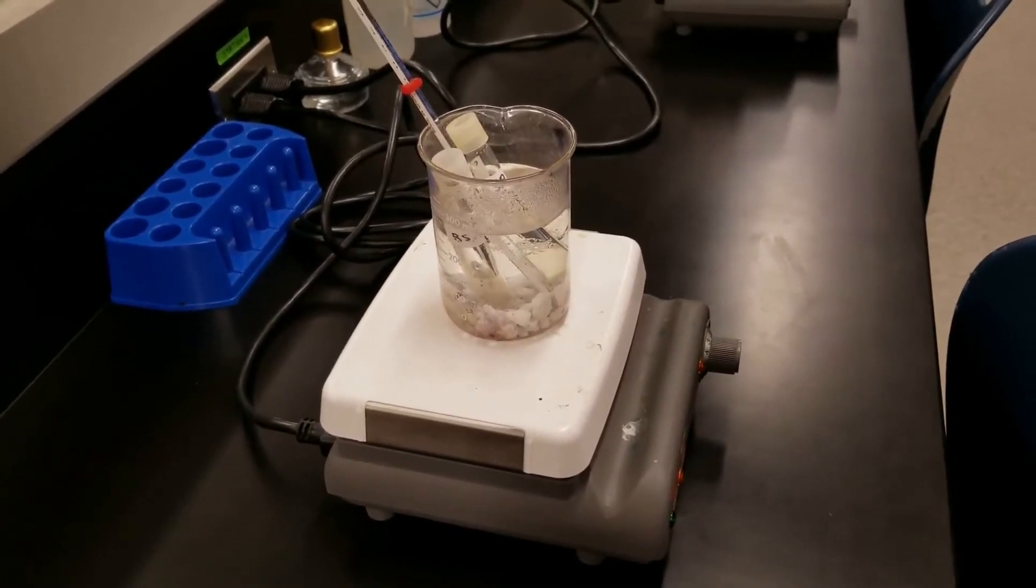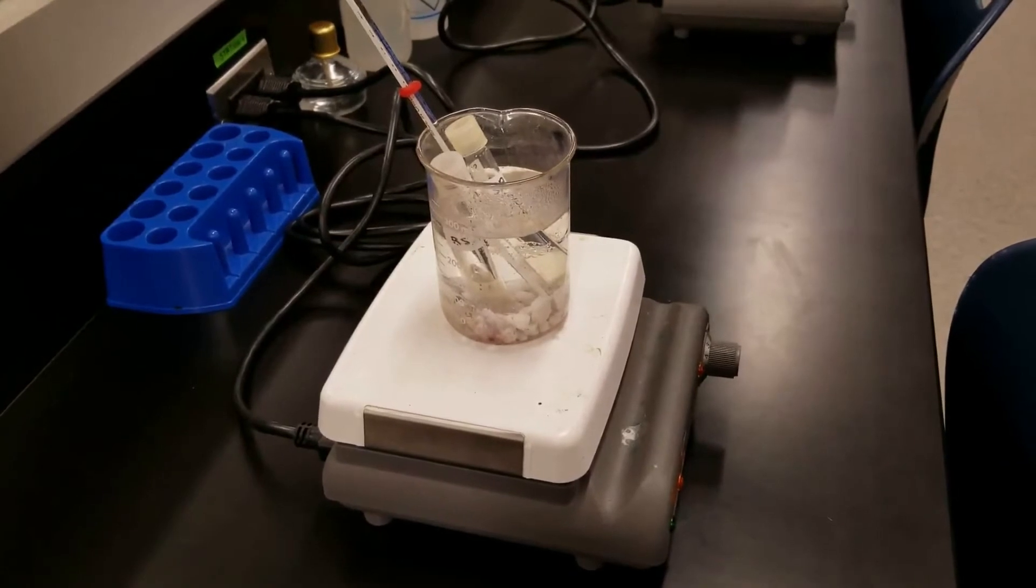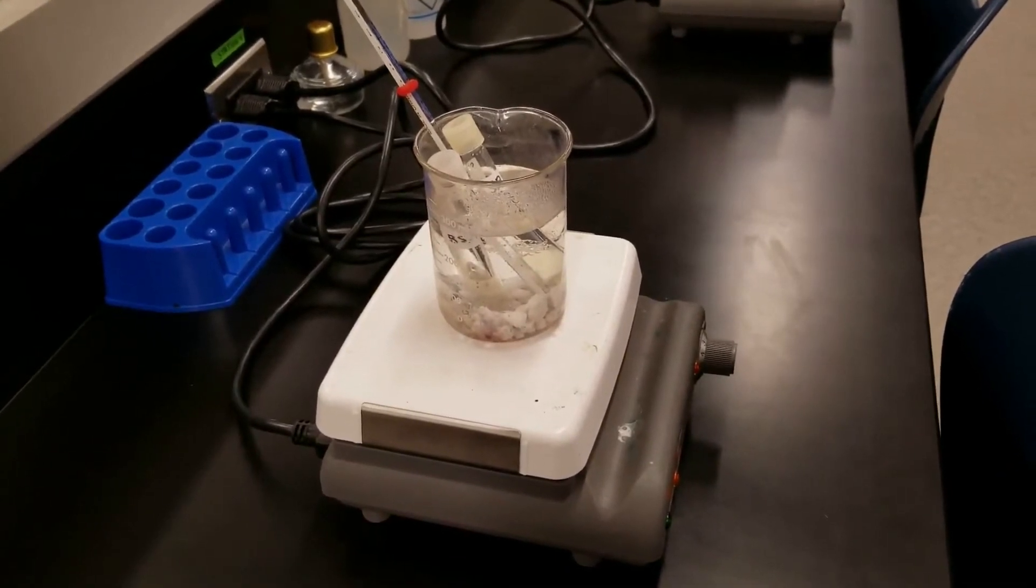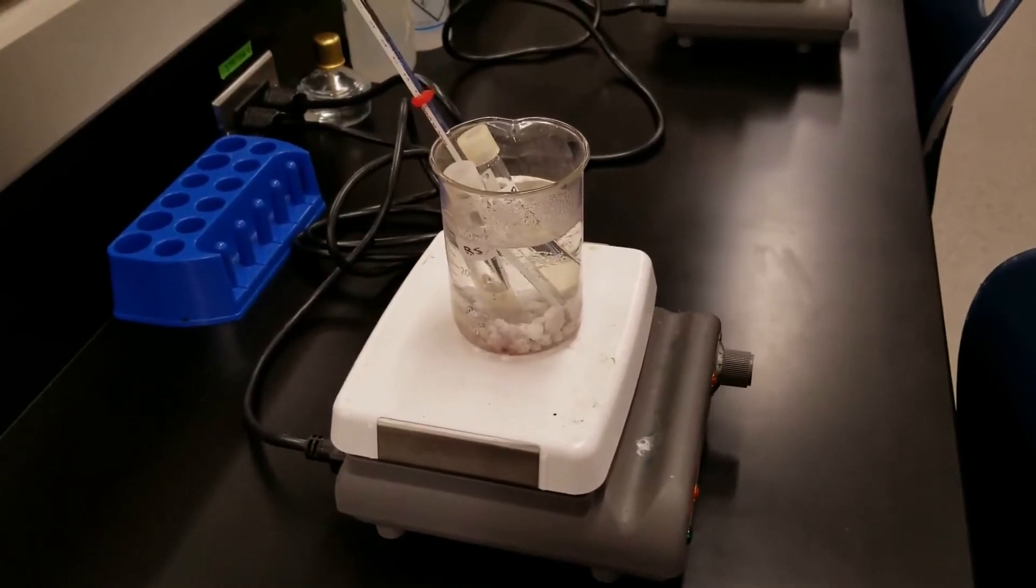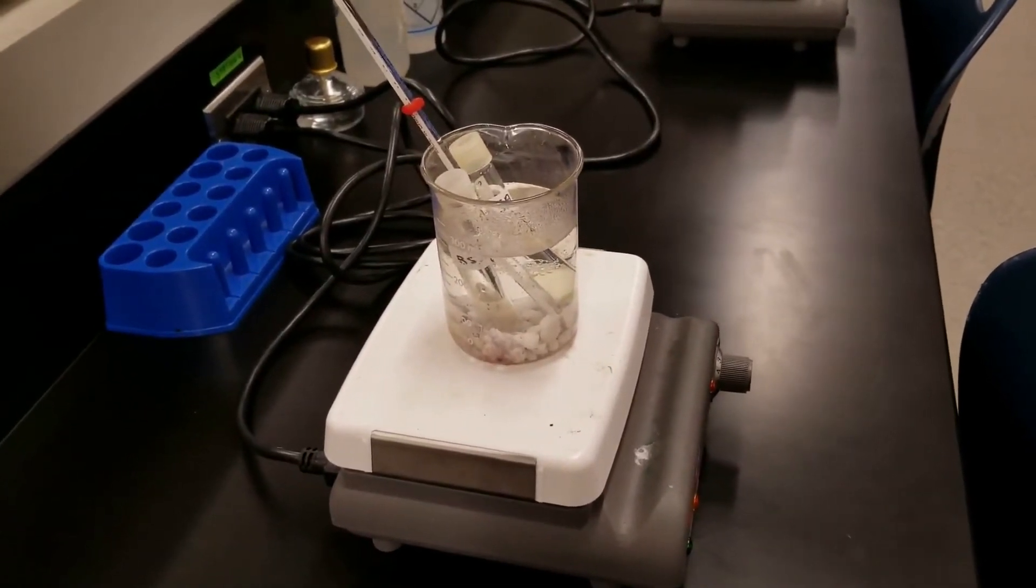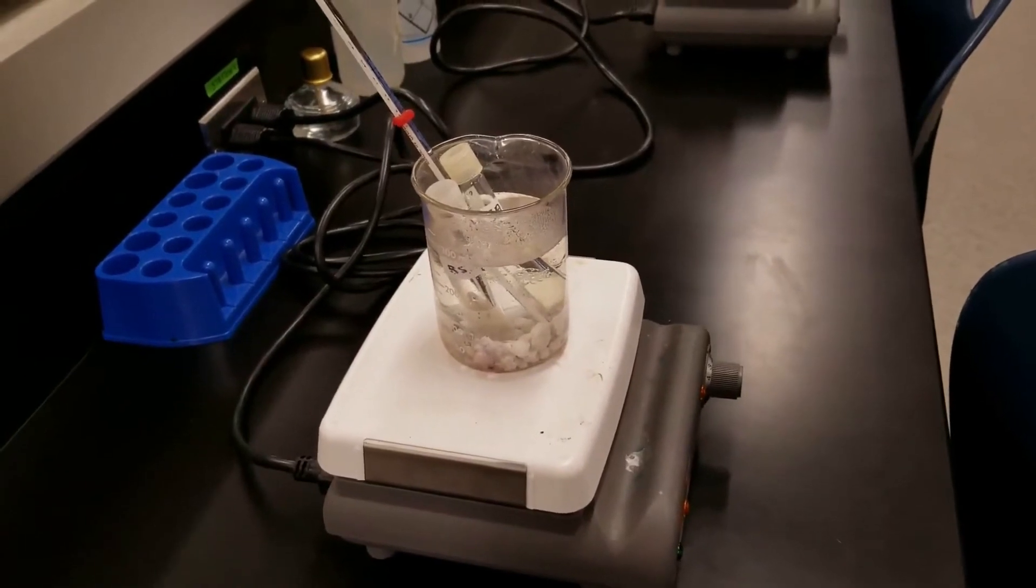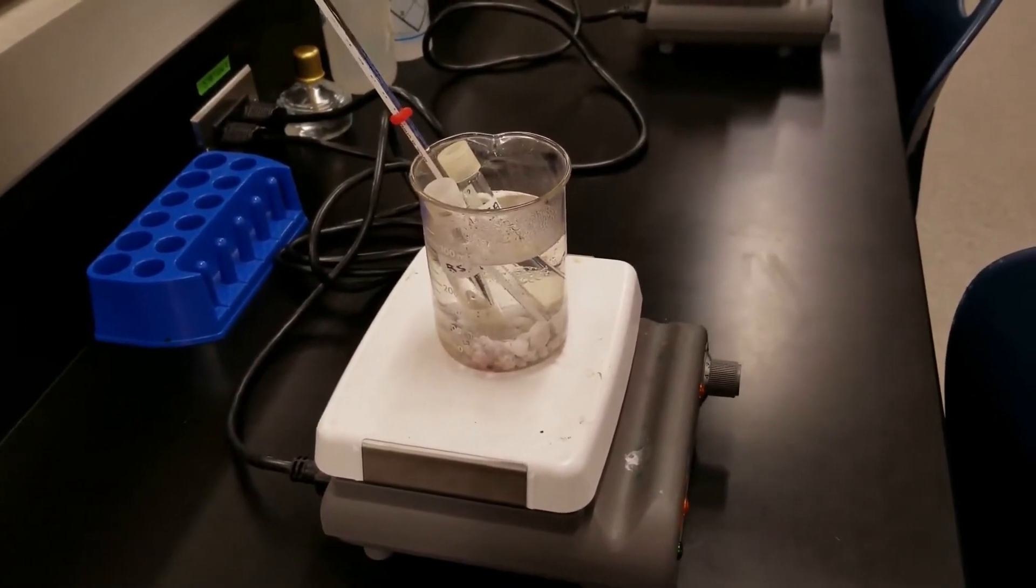At each of those temperatures, we will time it for 10 minutes, and then afterwards streak it on a plate. All the plates will be incubated at 37 degrees Celsius, and tomorrow we will look at it and see whether we had good growth, poor growth, or no growth, to see what the effect of the temperature is.